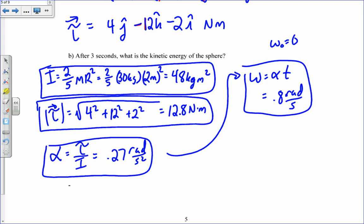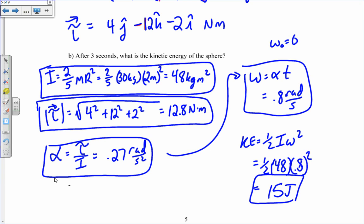And then the kinetic energy, bringing it all together, is 1 half i omega squared, 1 half of 48 times 0.8 squared, which is 15 joules. I don't think anybody had the right answer number-wise. A lot of you got the steps right, just had little minor mistakes throughout.